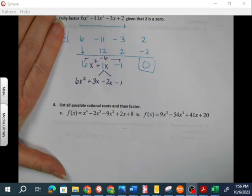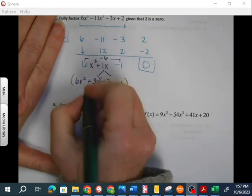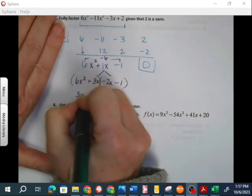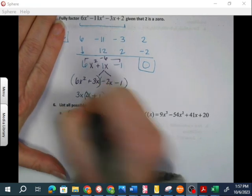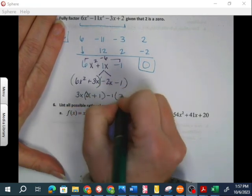So, factoring by grouping. I'm going to group these. These have a 3x in common, leaving the 2x plus 1, and these have a negative 1 in common, leaving the 2x plus 1.